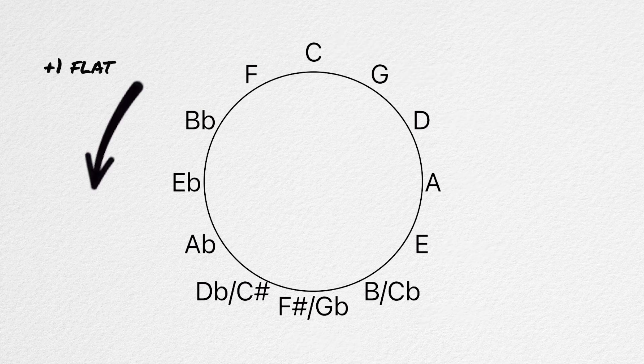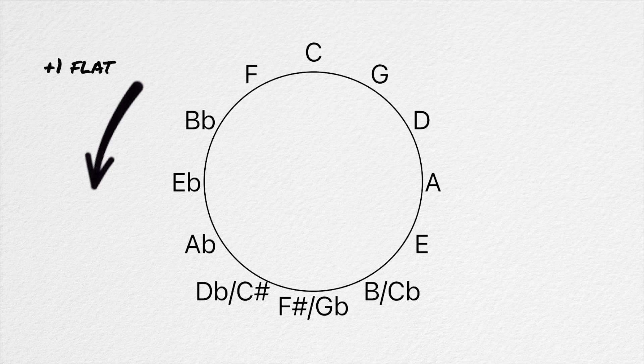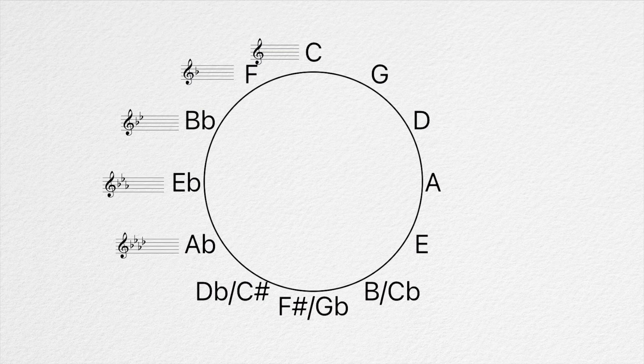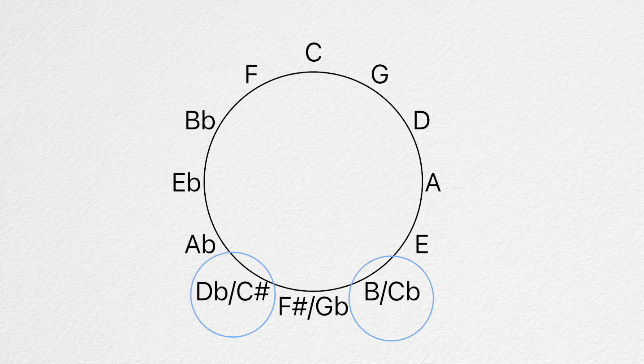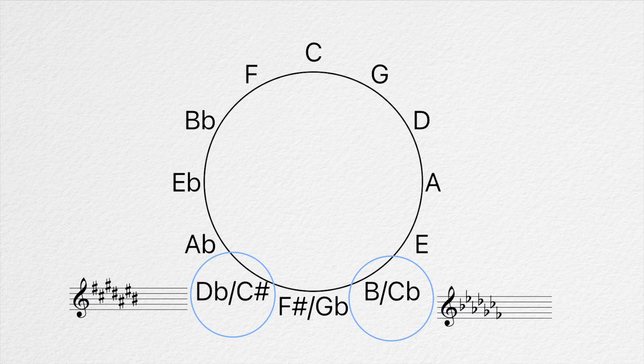The exact opposite is true for flats. As we move counterclockwise away from C, one flat is added. C starts with zero, then F has one, B flat has two, up to G flat, which has six. There are two other enharmonic keys that are typically shown on the circle. C flat major, which has seven flats, and C sharp major, which has seven sharps.